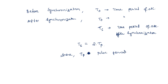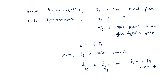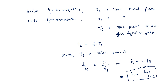Since Ts equals 2Tp, we can write 1/Fs equals 2/Fp, which gives Fp equals 2 times Fs, or equivalently Fs equals Fp divided by 2. So frequency division is occurring here: the new output frequency Fs is equal to half of the pulse frequency Fp. In this way, frequency division of oscillations can be achieved using synchronization.